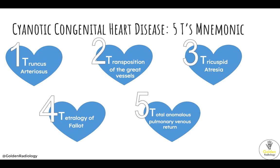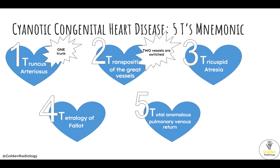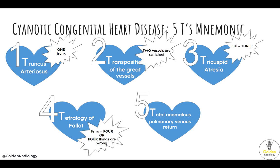The way to remember the five T's is: one for one trunk, two for two vessels are switched, three for tricuspid, four for tetralogy — or four things are wrong, and five for five words in total anomalous pulmonary venous return.